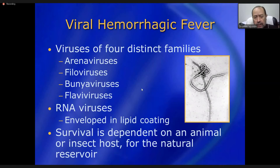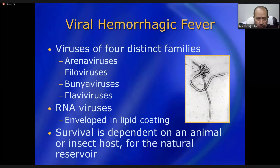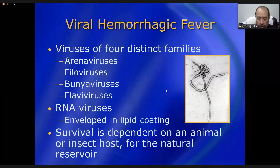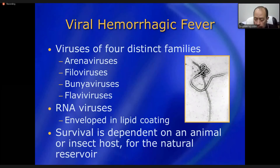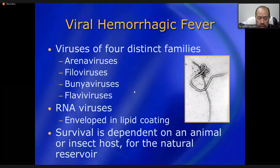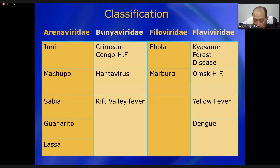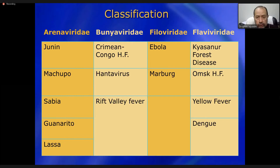Survival of these viruses is dependent on an animal or insect host as a natural reservoir. As long as the natural reservoir is present, these viruses will remain and the disease will persist. The four families — Arena, Filo, Bunya, and Flavi — are the key groups. Among Arena viruses, five notable ones are Junin, Machupo, Sabia, Guanarito, and Lassa.